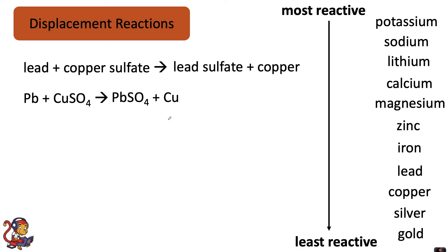Here is another example. Lead plus copper sulphate would make lead sulphate plus copper. As a symbol equation: Pb + CuSO₄ → PbSO₄ + Cu.